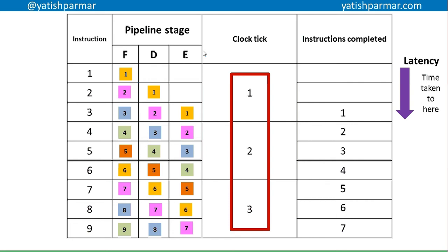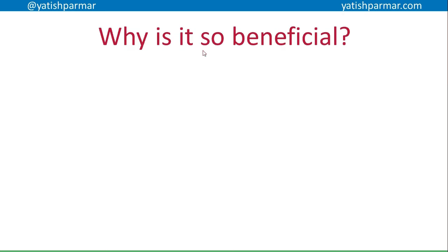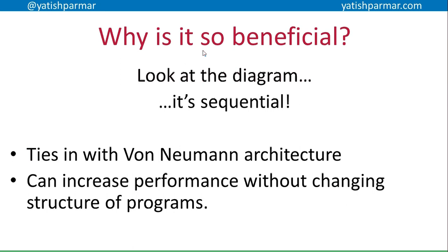Compared to the traditional FDE cycle — one clock tick per instruction, one done; two ticks, two done — you can see the latency here for completing that first instruction, but after that instructions are executed in a third of the previous time. We're using the idle components of the CPU during the fetch and decode stages, increasing efficiency. This is beneficial and it ties in with von Neumann architecture — sequential execution is enhancing performance without needing to change the structure of the program or rewrite code.